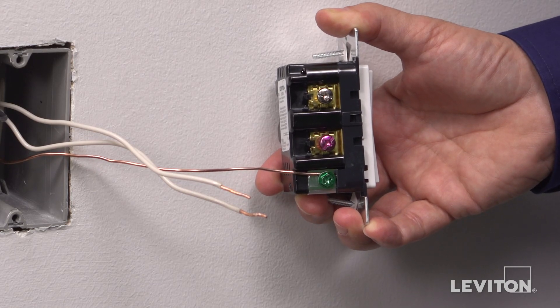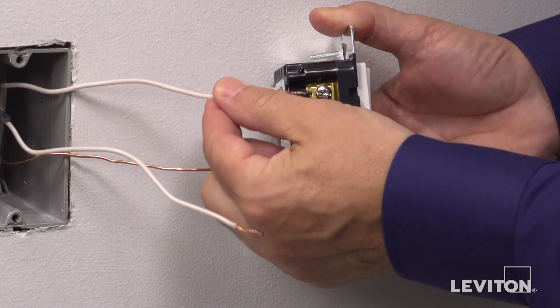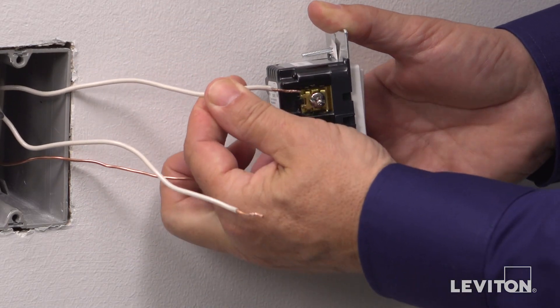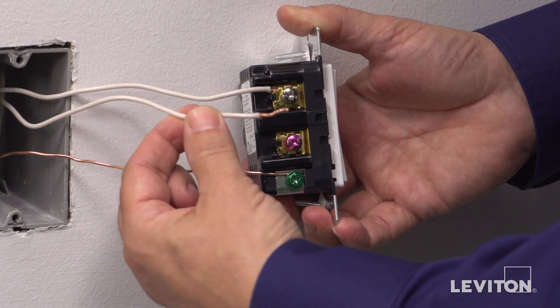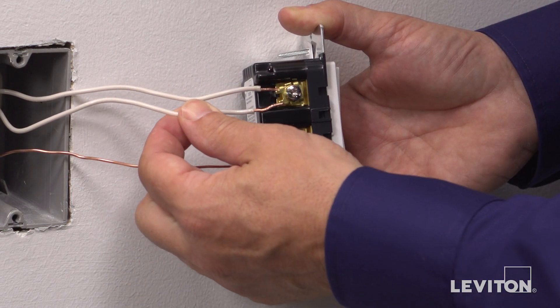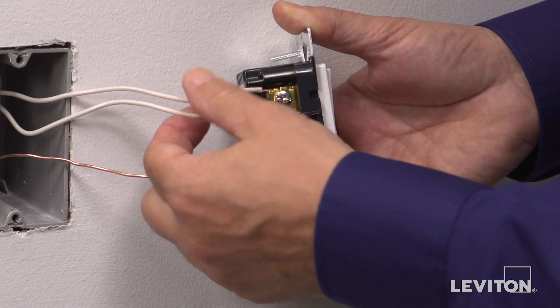Continue the same process with the white wire under the clamp of the silver terminal screw marked WH. Note, each terminal can accommodate back wiring for up to two conductors.